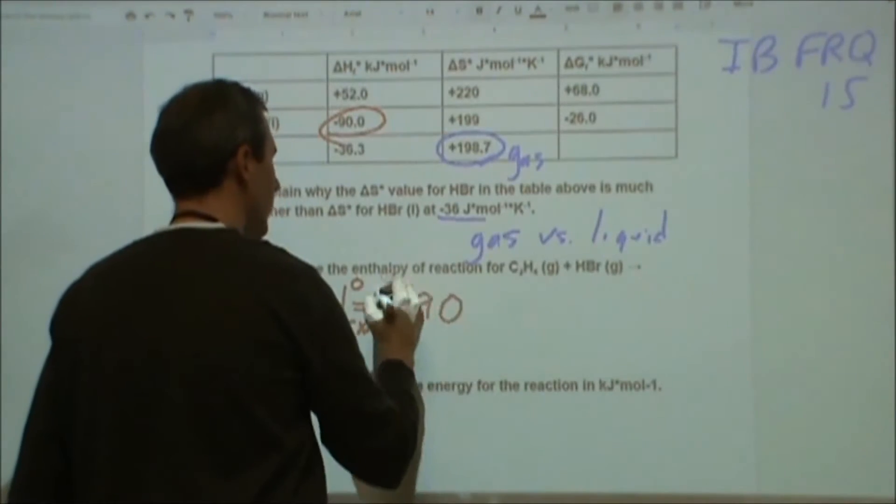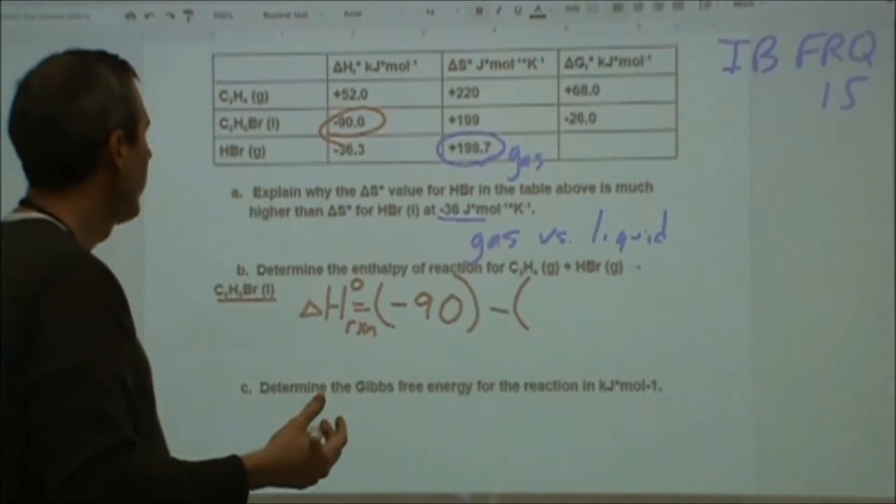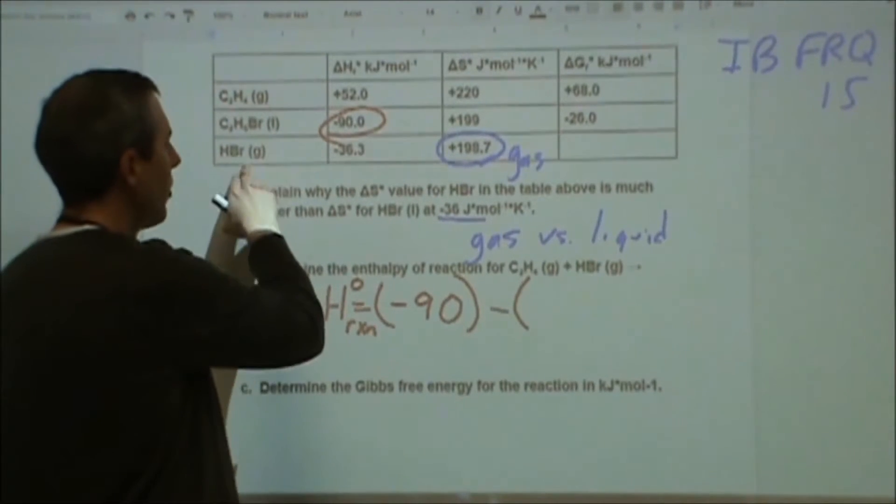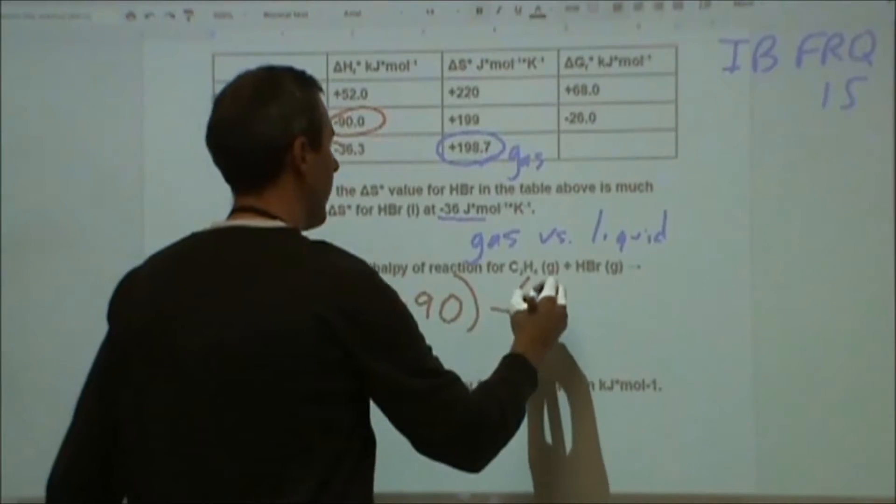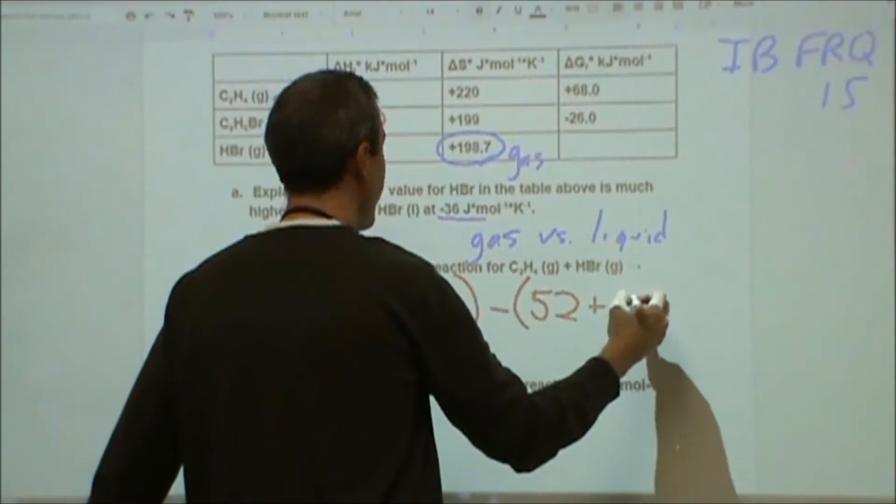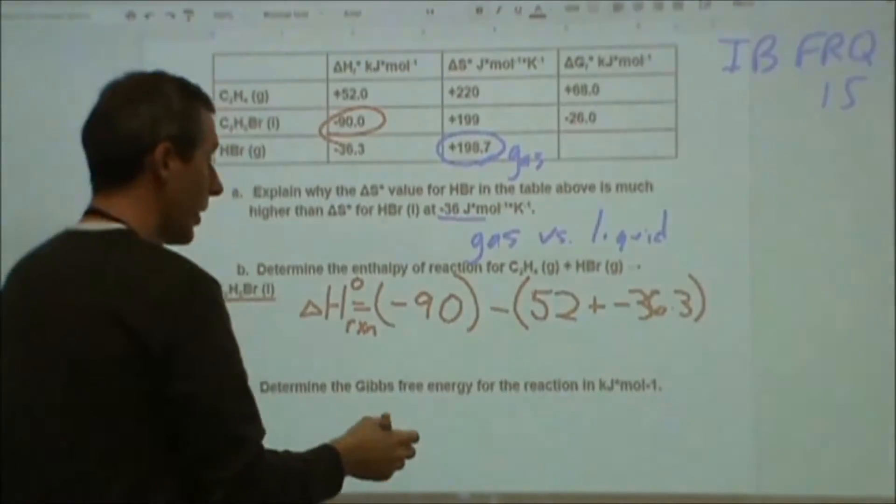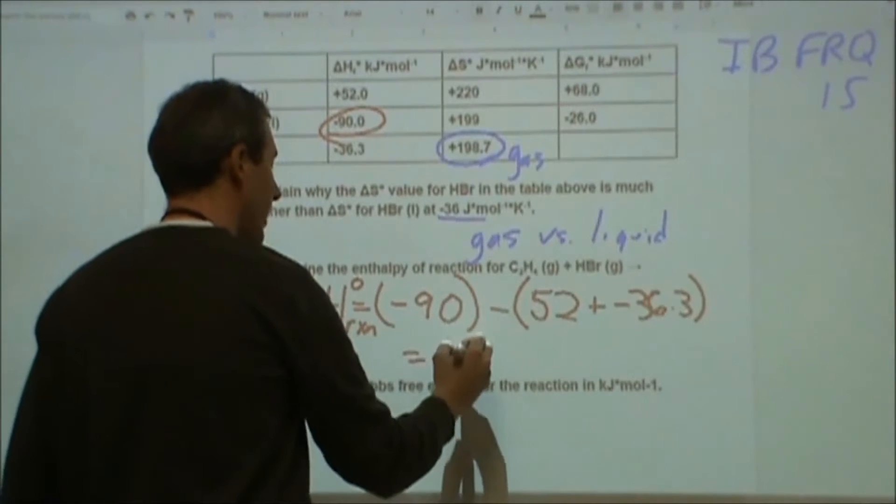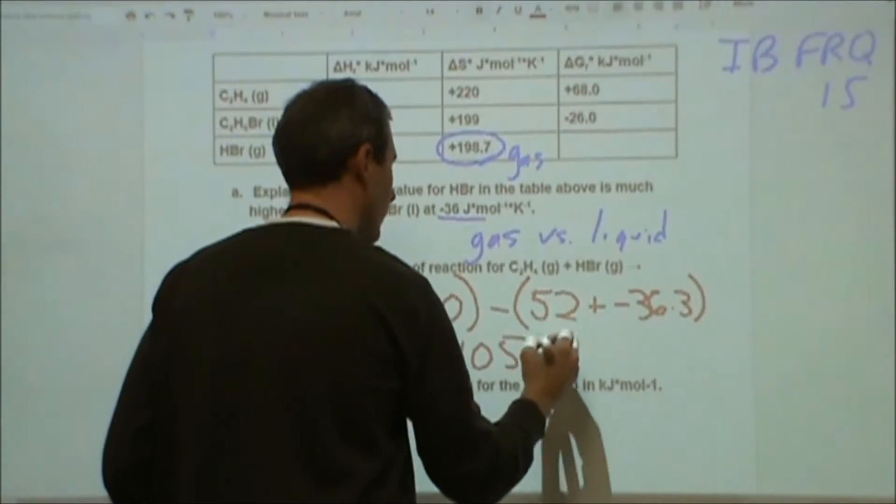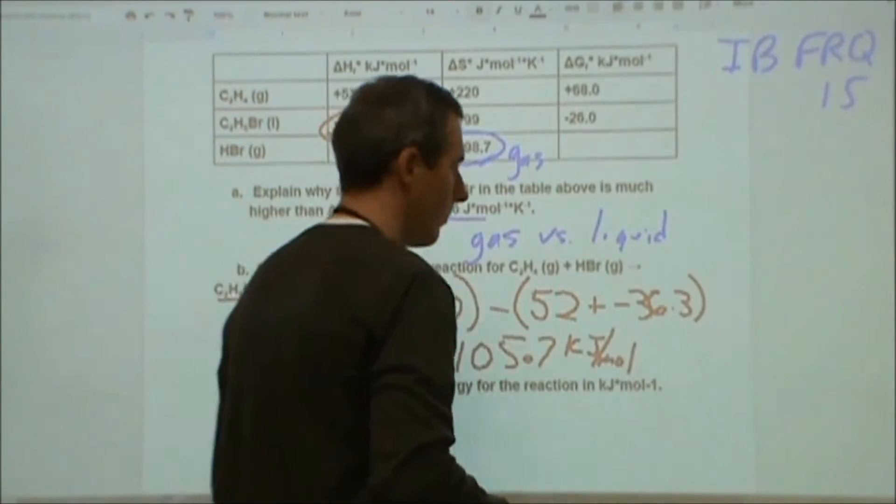So the enthalpy for the reaction is going to be equal to the products, which is negative 90, minus the entire sum of all of the reactants. So for the reactants we have the ethene gas and the hydrobromic acid gas. So we're going to have 52, positive 52, and then plus a negative 36.3. And so if we total that, that's going to add up to be negative 105.7, and the units are kilojoules per mole.